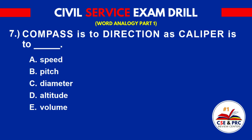Number 7: 'Compass' is to 'direction' as 'caliper' is to blank. A. Speed. B. Pitch. C. Diameter. D. Altitude. E. Volume. The answer is C. Diameter.